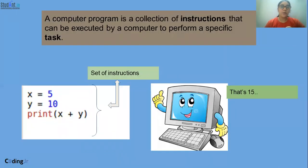So the interaction between us humans and the computer is known as computer programming. A computer program is a collection of instructions that can be executed by a computer to perform a specific task. As you can see here, we have a set of instructions. We have assigned some value as five to an alphabet called x and 10 to another alphabet called y.